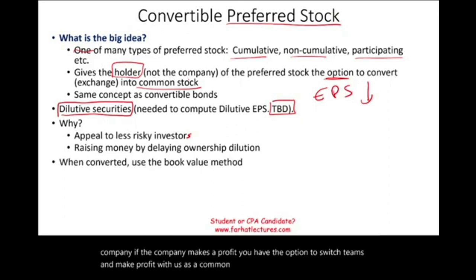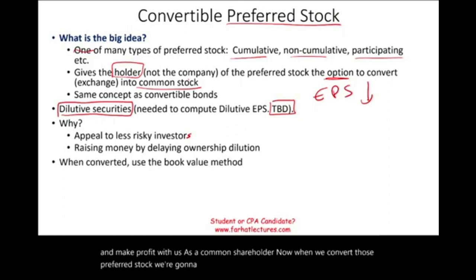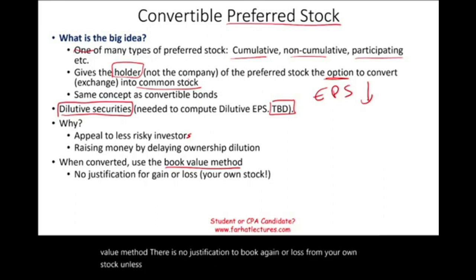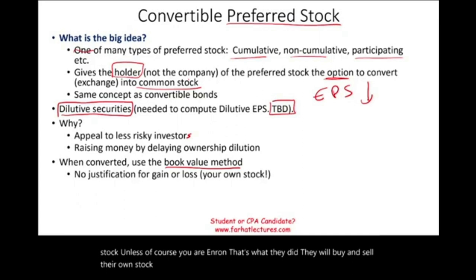When we convert preferred stock, we use the book value method, just as with convertible bonds. There is no justification to book a gain or a loss from your own stock — unless, of course, you are Enron, which would buy and sell their own stock and book a gain. The best way to illustrate convertible preferred stock is to look at an example.